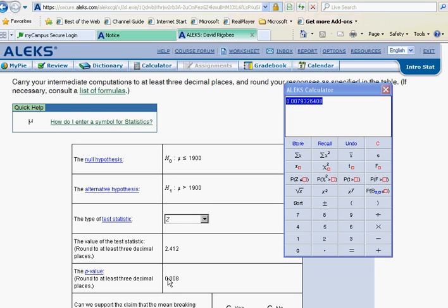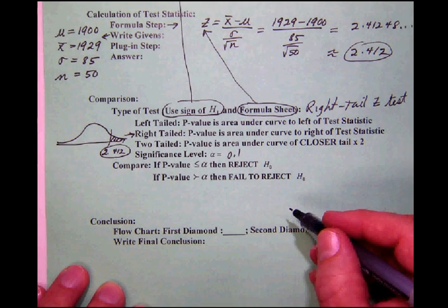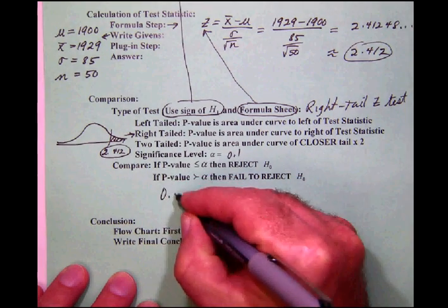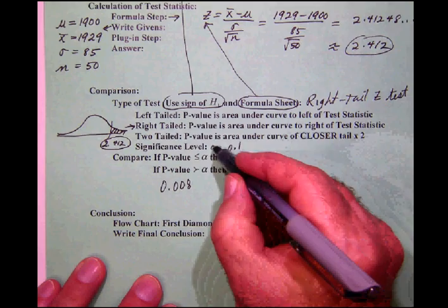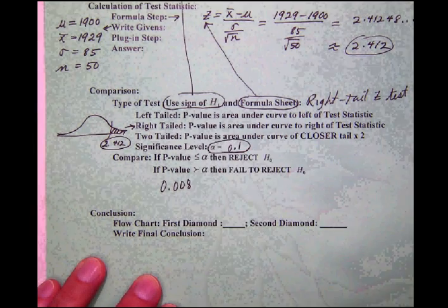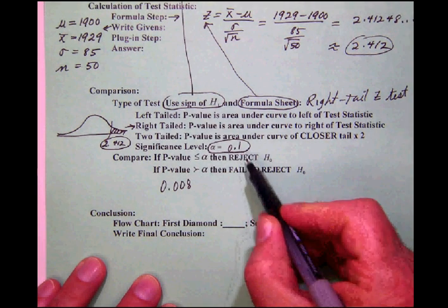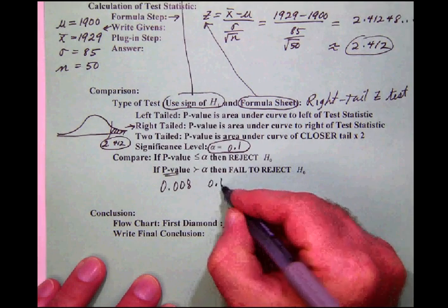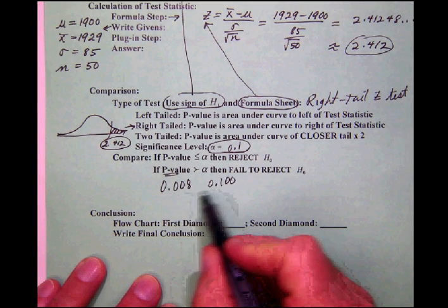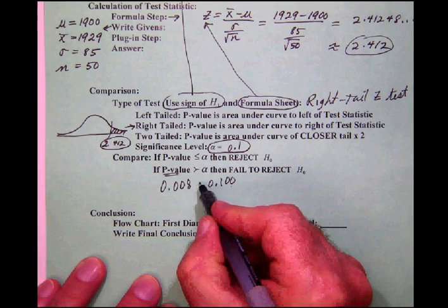Now, we have some things that we need to do back on the form. So let's go back there and decide now what it is that we have. So with our p-value of 0.008, we're going to make the comparison now. And what we compare to then is the alpha value, which is also known as the significance level. In this case, our alpha, our significance level, is 0.1.